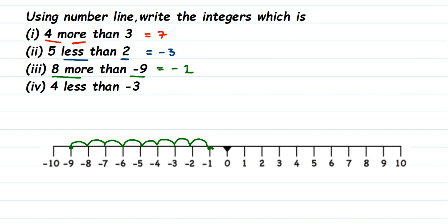The last question is four less than minus three. First locate minus three on the number line — minus three is here. Four less means go to the left side, so four units to the left: one, two, three, four — we have reached minus seven. So four less than minus three is minus seven.